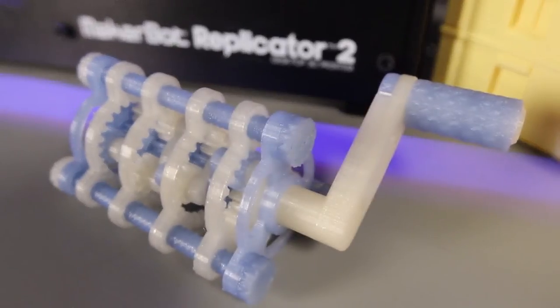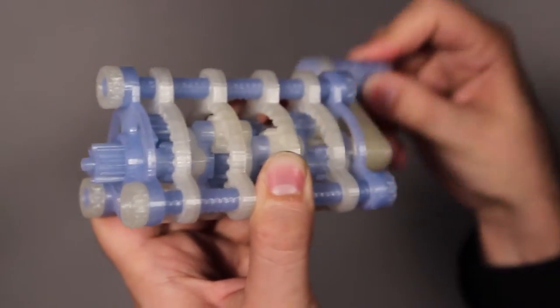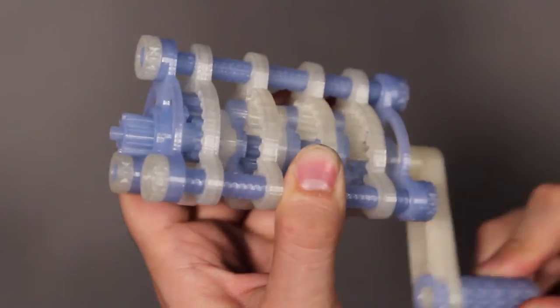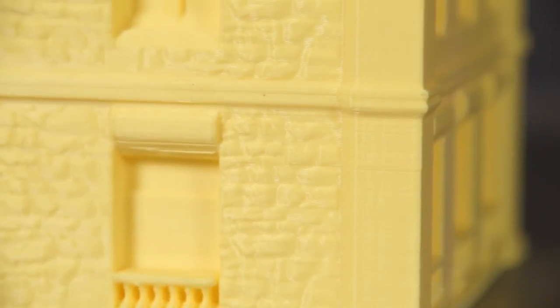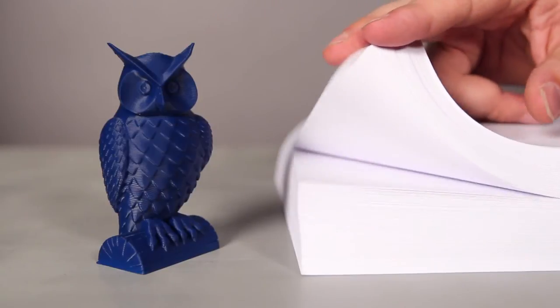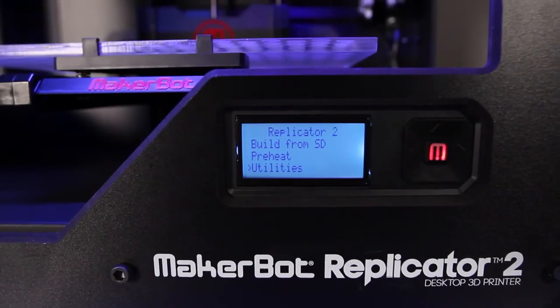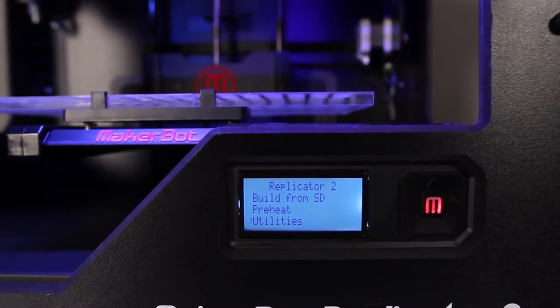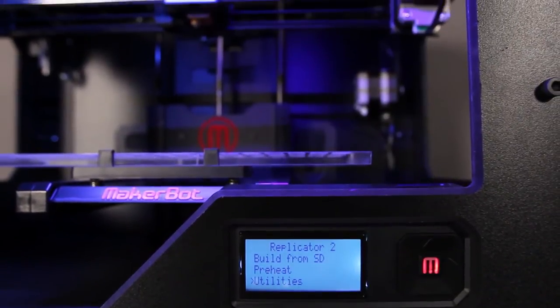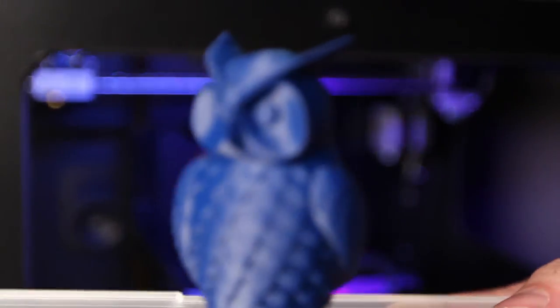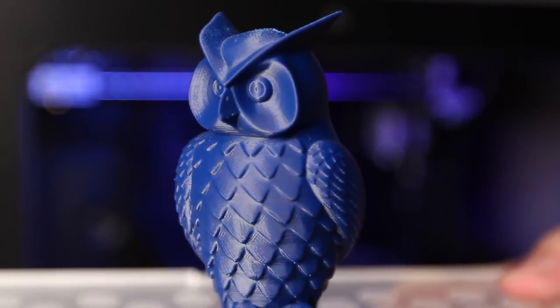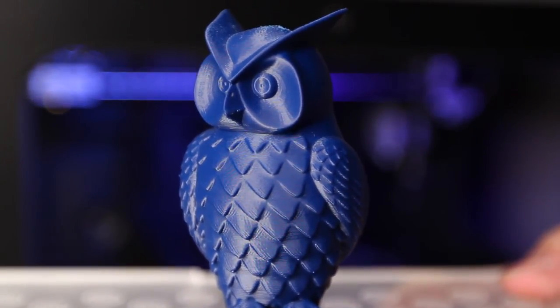The MakerBot Replicator 2 desktop 3D printer is readily capable of achieving 100 micron layer resolution. That means that the height of each layer of material is 2.5 times finer than the layer height of a previous MakerBot. That's as fine as a layer of printer paper. You can forget about the ridged surfaces you've seen on the models produced by hobbyist 3D printers. With the MakerBot Replicator 2, you'll be pulling professional quality models right off the build platform that don't need sanding or post-production.